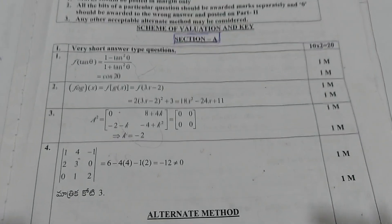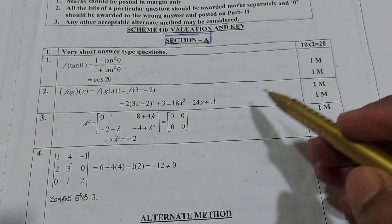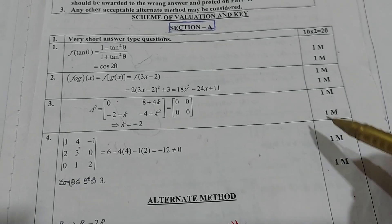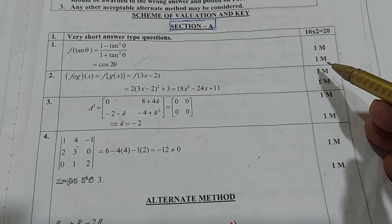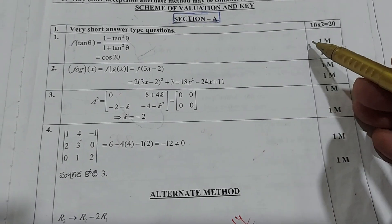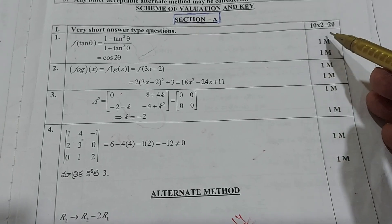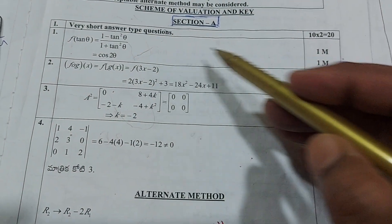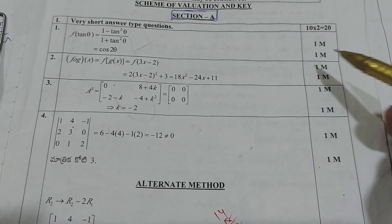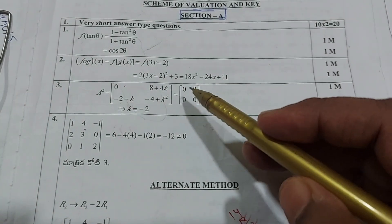Here we go. First we begin with Section A, so VSAQs. Here marks division is given in this right column — you can look at the right side column for marks division. It's a 2-mark question; VSAQs — 10 questions are there, 10 into 2 is 20 marks. Here, first step 1 mark, second step final answer 1 mark — that is the division of marks.